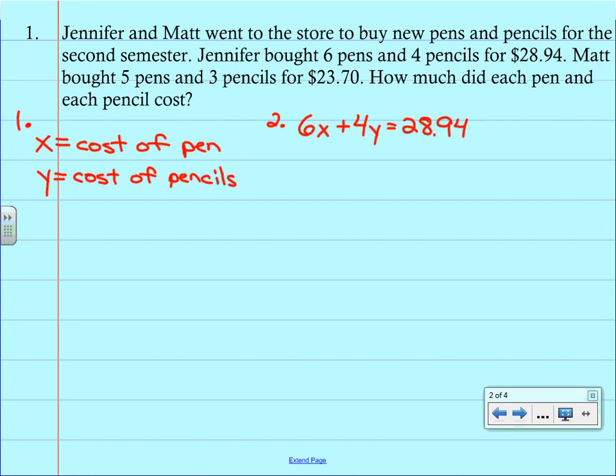The next sentence, Matt bought five pens and three pencils for $23.70. Again, it kind of just jumps out at you: 5X plus 3Y equals $23.70.